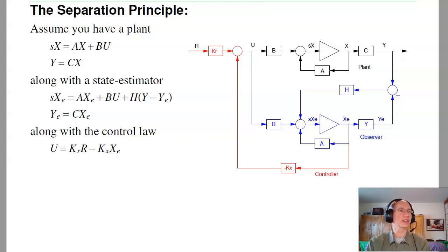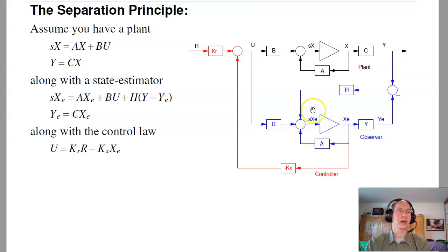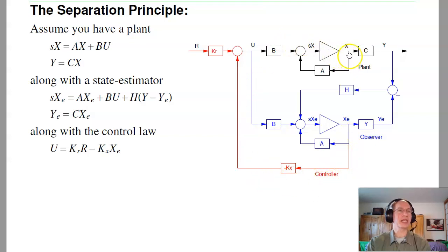You can see that as follows. Assume you have the following plant: x_dot = Ax + Bu, y = Cx, along with an observer where x_c_dot = A·x_c + B·u + H·(y - estimated output). Along with the feedback controller u = K_r·r - K_x·x_c, using the estimated states because presumably we can't measure all the states directly.